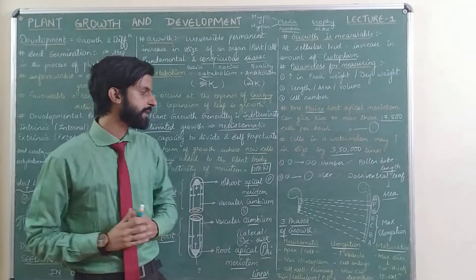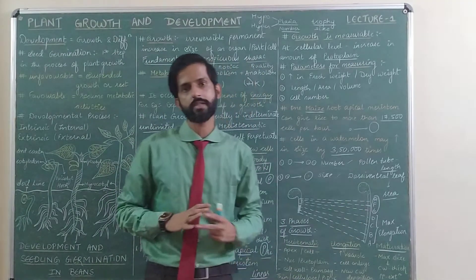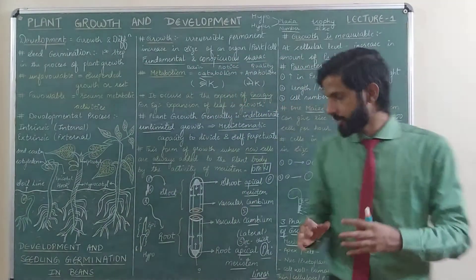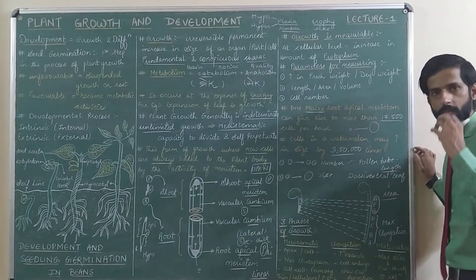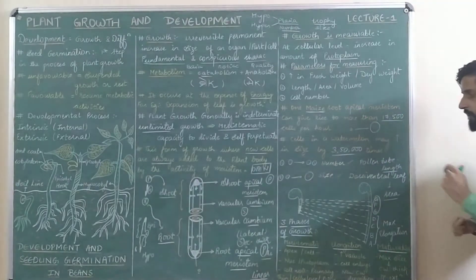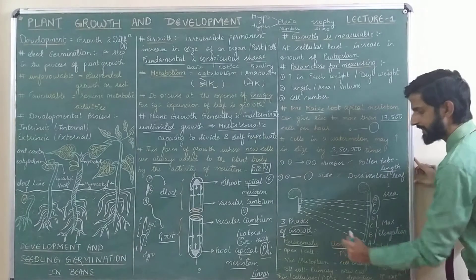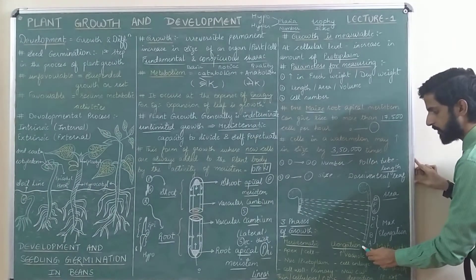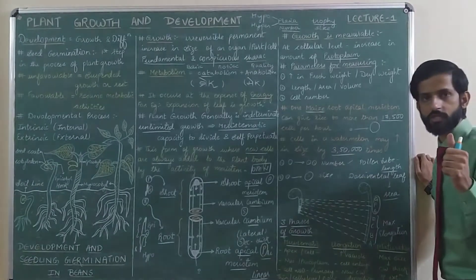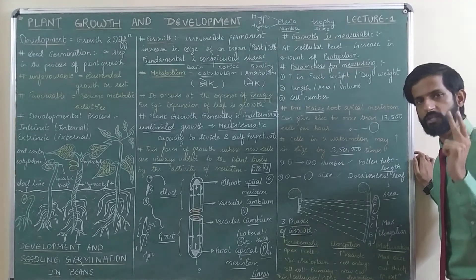There are three phases of growth. The first phase is called the meristematic phase. The second is called the elongation phase. And the third is the maturation phase.